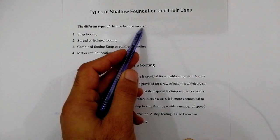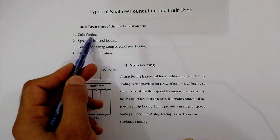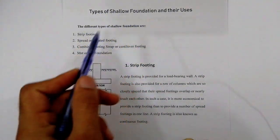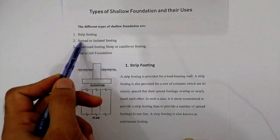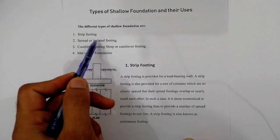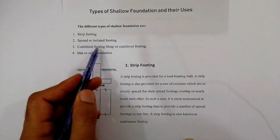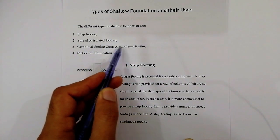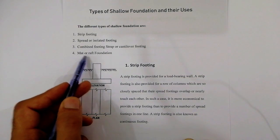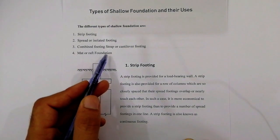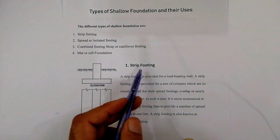The different types of shallow foundations are: first, strip footing; second, spread or isolated footing; third, combined footing or strap/cantilever footing; and fourth, mat or raft foundation.